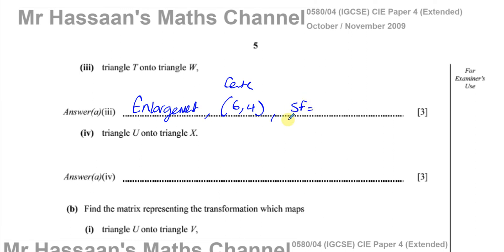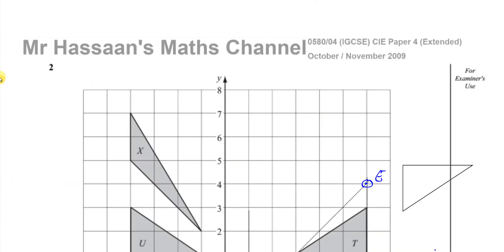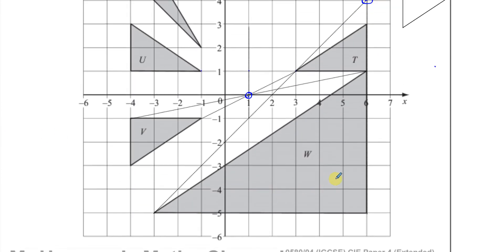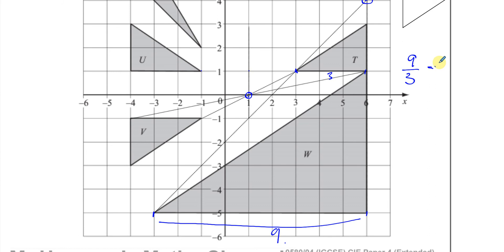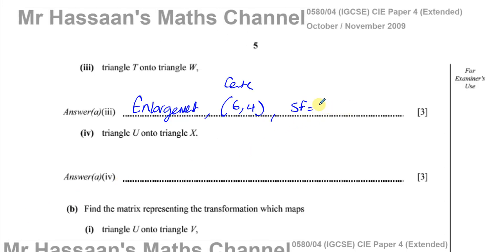Now we work out the scale factor of enlargement. You go to the image — W is the image. Choose a length on the image: this base goes from minus 3 to 6, so it's 9 units long. The corresponding base on the object goes from 3 to 6, so it's 3 units long. The scale factor is the length on the image divided by the corresponding length on the object: 9 over 3, which is 3. So the scale factor of enlargement is 3. To get the 3 marks: mention it's an enlargement, give the center (6, 4), and give the scale factor of 3.